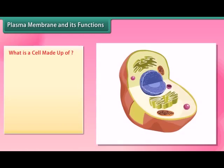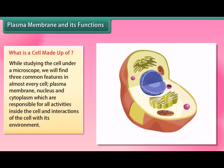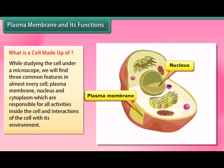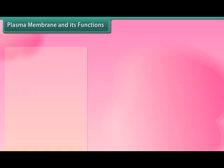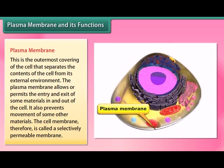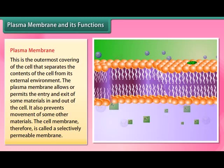While studying the cell under a microscope, we find three common features in almost every cell: plasma membrane, nucleus, and cytoplasm, which are responsible for all activities inside the cell and interactions with its environment. The plasma membrane is the outermost covering of the cell that separates the contents of the cell from its external environment. It allows the entry or exit of some materials in and out of the cell, while preventing movement of other materials. The cell membrane is therefore called a selectively permeable membrane.